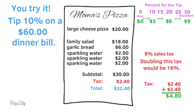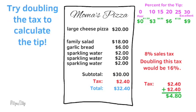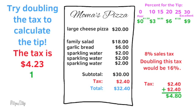You try it. Tip 10% on a $60 dinner bill. 10% of $60 is $6. Now try 20% on a $60 dinner bill. 20% of $60 is $12. This time, try doubling the tax to calculate the tip. The tax is $4.23. $4.23 times 2 is $8.46.